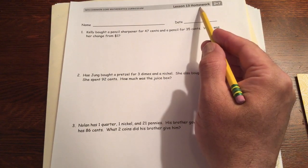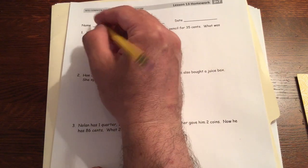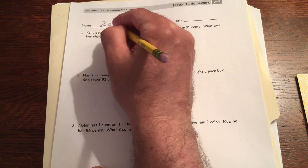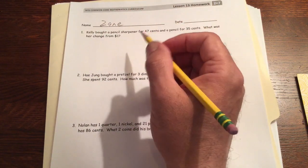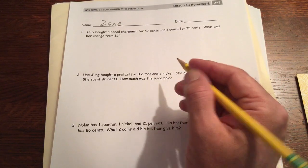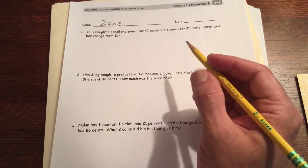Welcome to lesson 13 homework of module 7 second grade. Write your name. Now this is two pages, I'm gonna do two different videos, one for each page. So this is just gonna be the first page and then another video for page two.